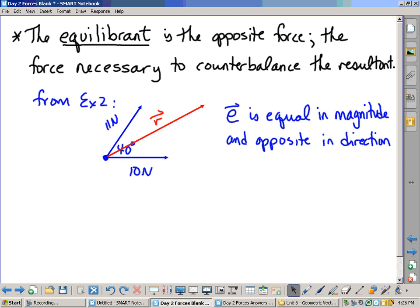So if we look back at this example that we just did, here we have the two vectors, the 10 newton force, the 11 newton force, the resultant is something in between them. Let's call E the equilibrium, that is equal in magnitude and opposite in direction.